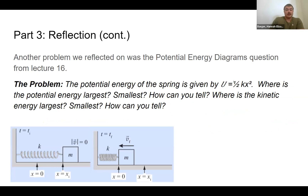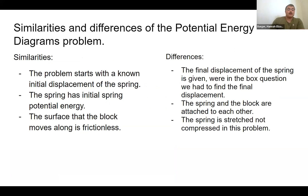Another similar problem was a potential energy diagram problem from lecture 16. The potential energy of a spring is given by one-half kx squared, and the problem asks where potential and kinetic energy are largest or smallest. Similarities: the problem starts with a known initial spring displacement and initial potential energy, and the surface is frictionless. Differences: the final spring displacement is given rather than found, and the spring and block are attached with the spring stretched, not compressed.